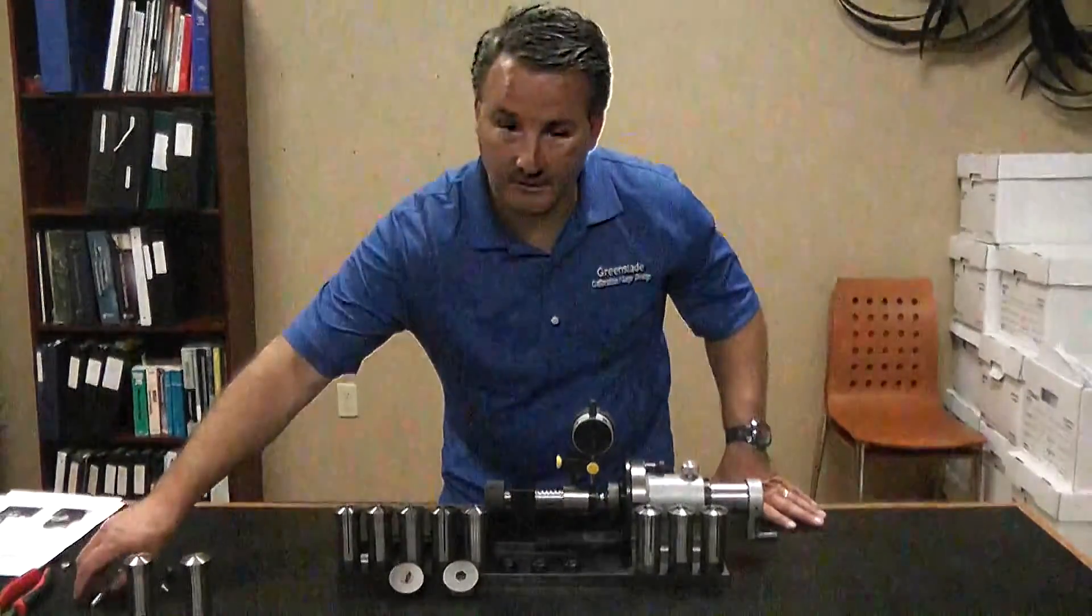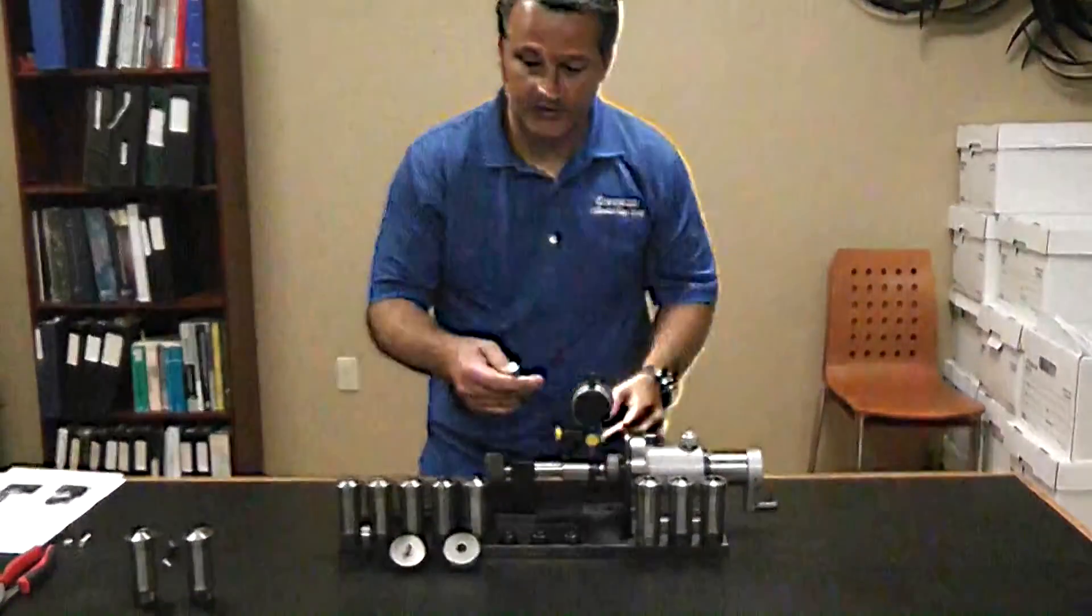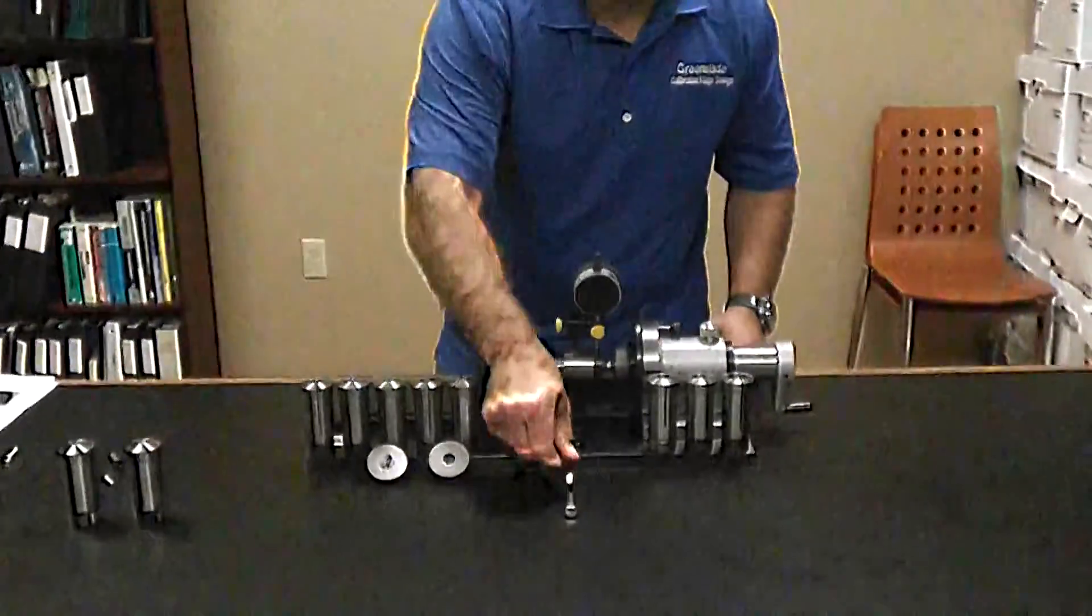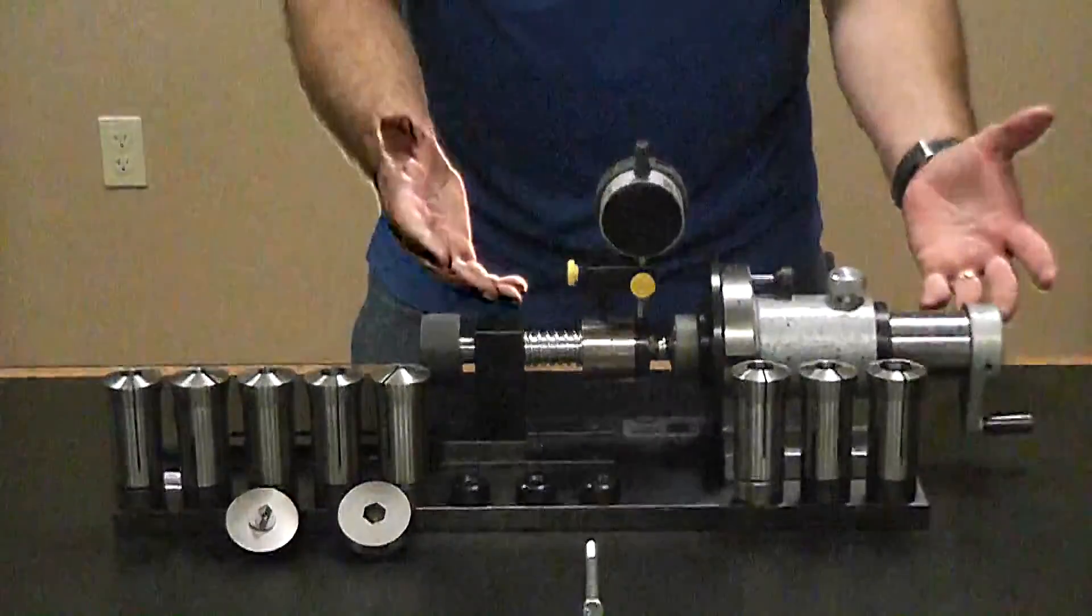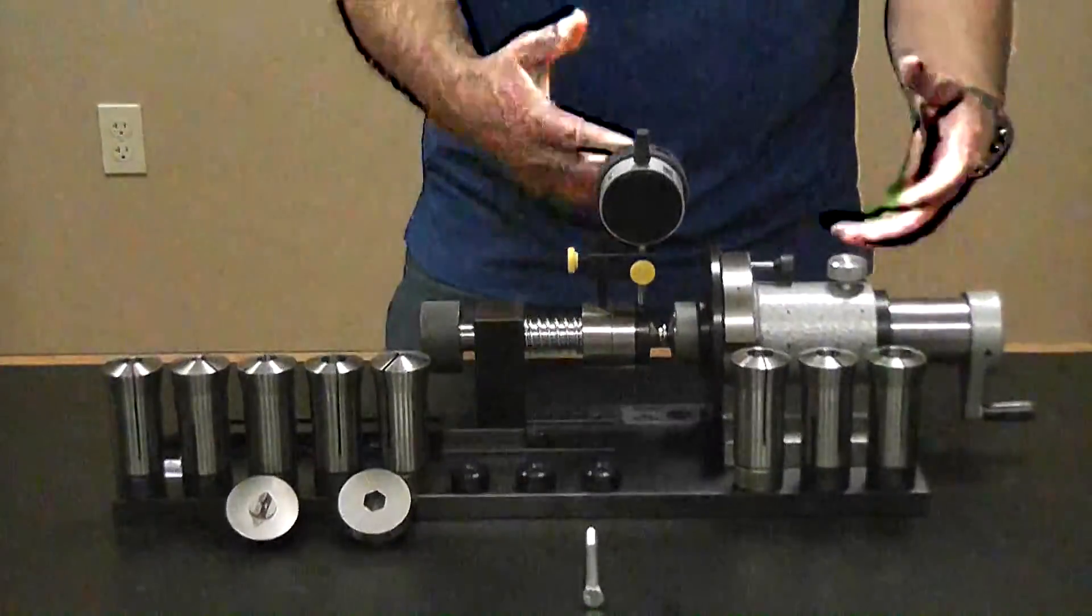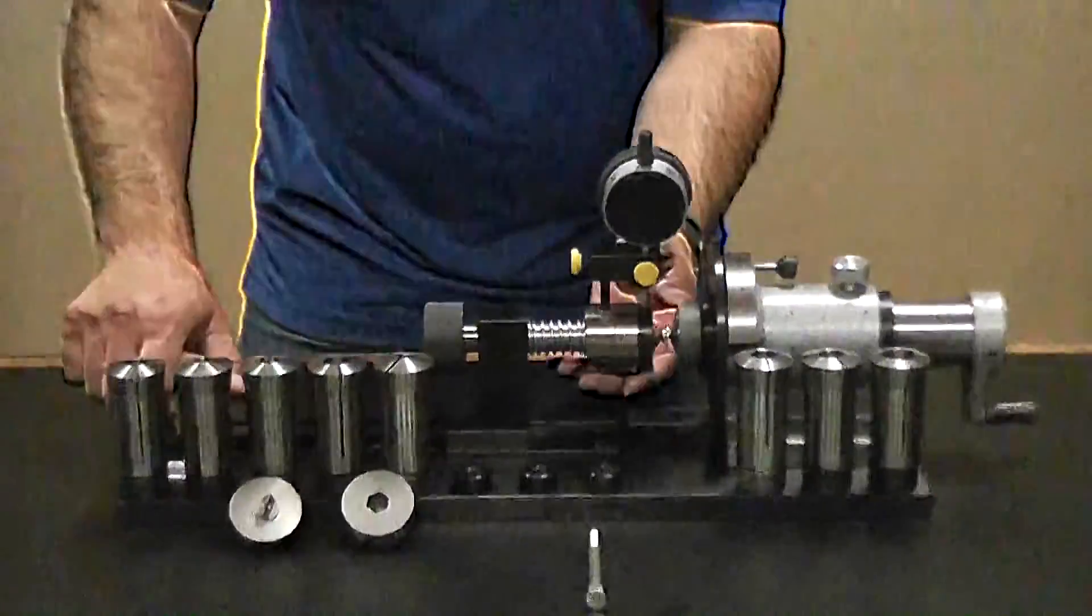The next fastener that we want to try to measure concentricity on is going to be our hex head. We are already set up for recess, so in order to break this down really quick, I'll show you how that works.